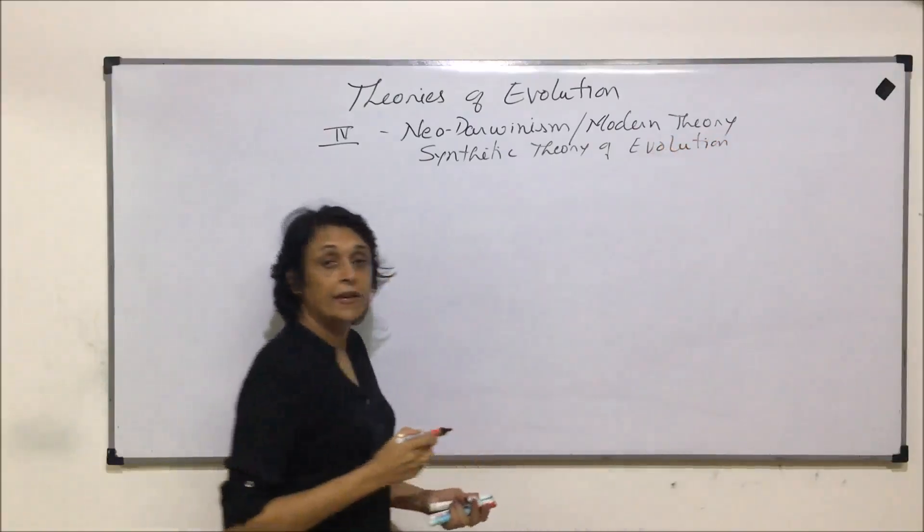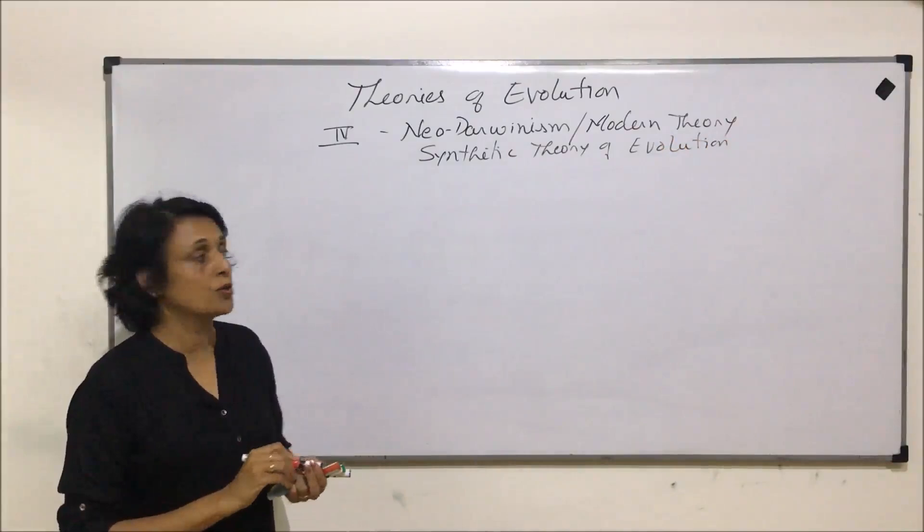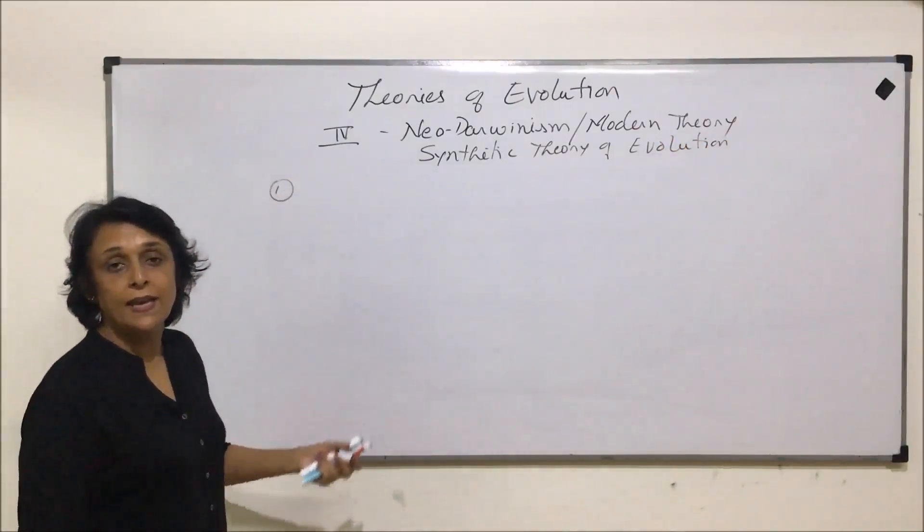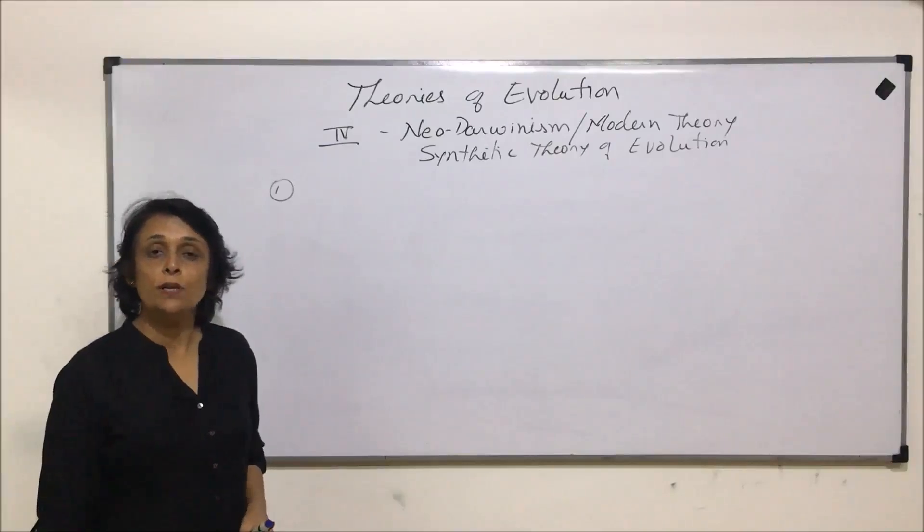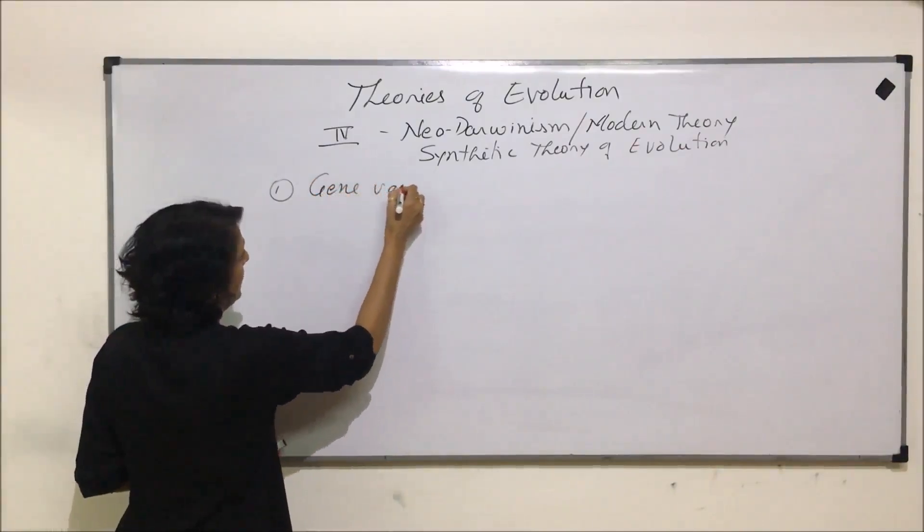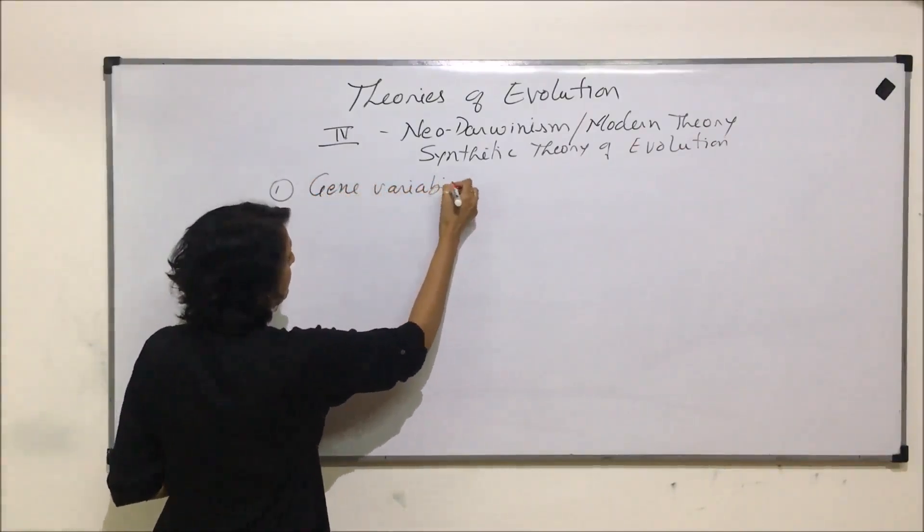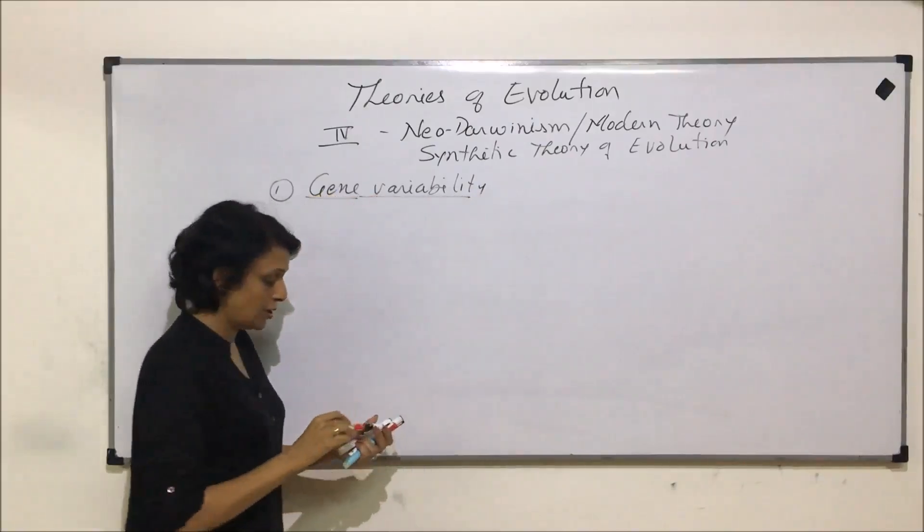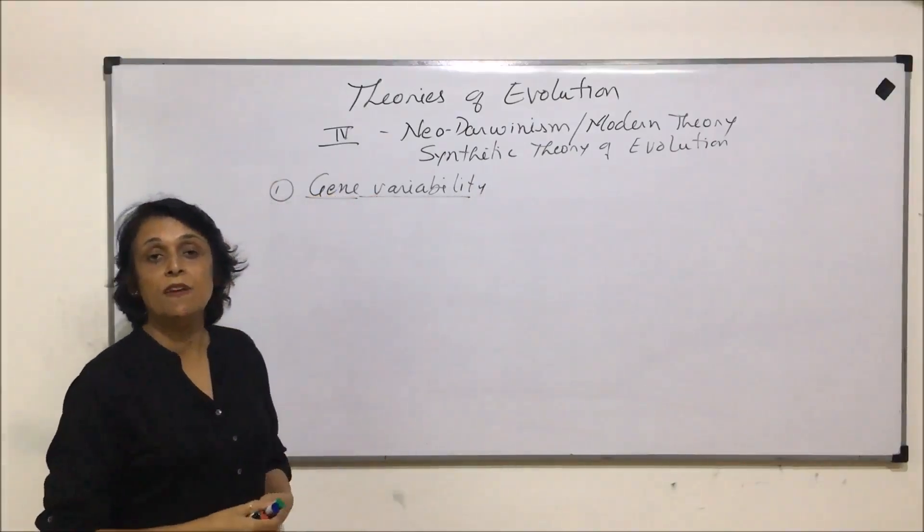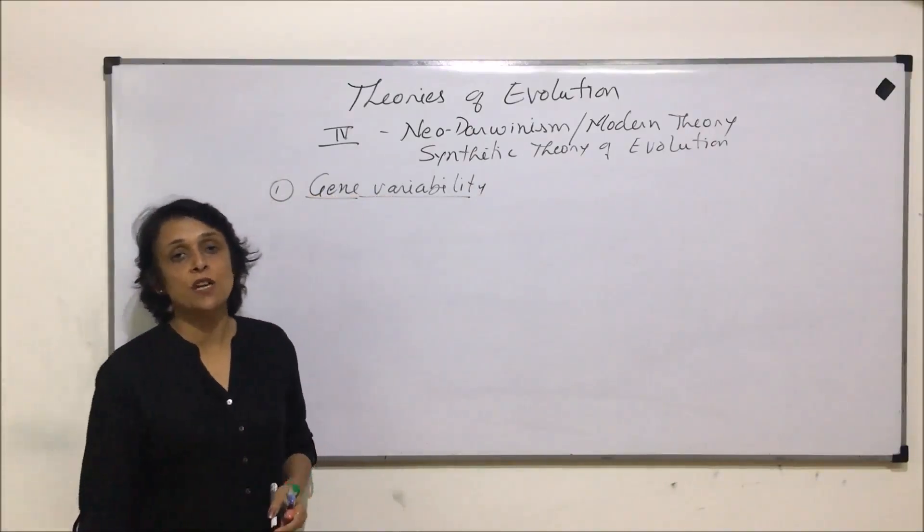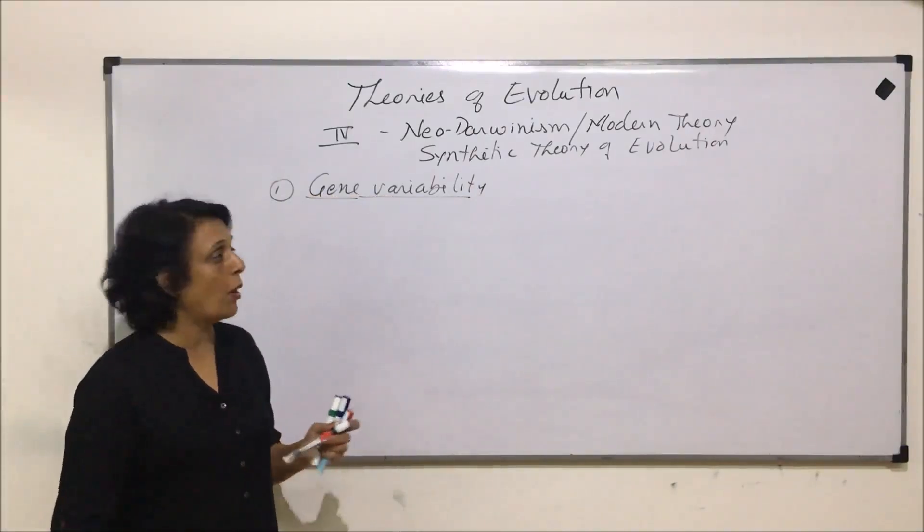This theory has two postulates. The first postulate says that in a population there is gene variability. That means in any given population there are variations and these variations exist because of certain genetic changes which are present in that population.